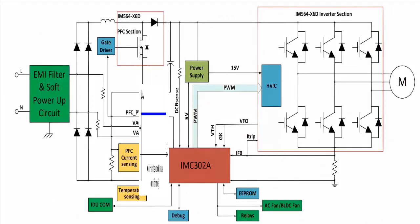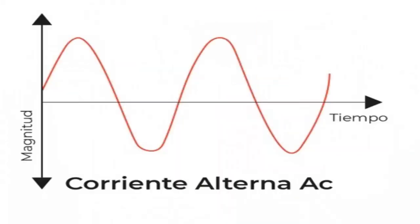Remember that alternating current flows in two directions while direct current flows in only one direction.